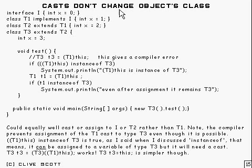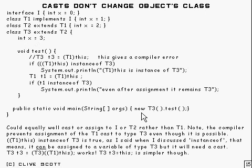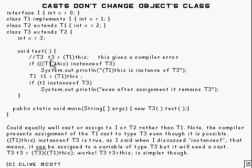As I've said, casts don't change an object's class, and here are some of the consequences of that. Same sort of setup arrangement of classes as before, but this time we're passing the variable 'this', which is of type T3, because we've just created a T3 and called test. So 'this' is of type T3, and if we cast it to type T1 and try to set a variable of type T3 equal to that, it will give a compiler error, which is why I've commented it out.